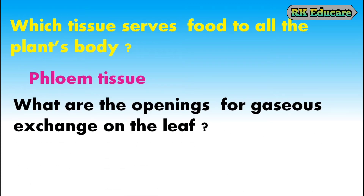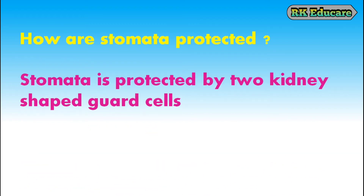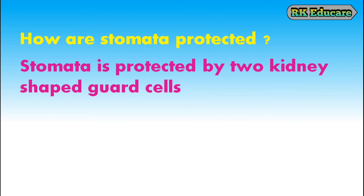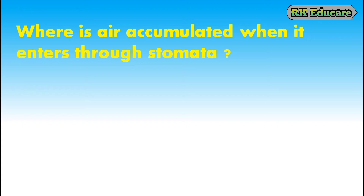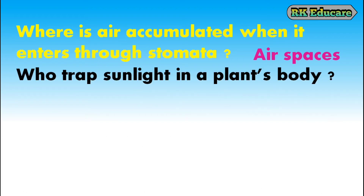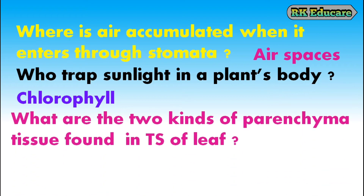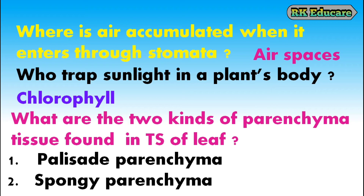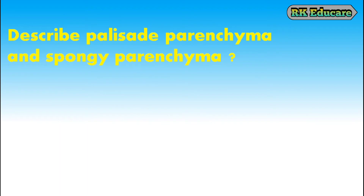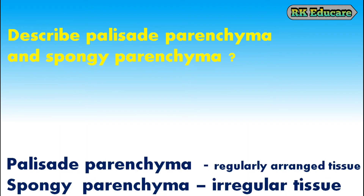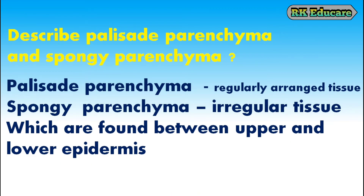What are the openings of gaseous exchange on the leaf? Stomata are the openings of gaseous exchange on the leaf. How are stomata protected? Stomata are protected by two kidney-shaped guard cells. When air enters through stomata, air is stored at air spaces. Who traps sunlight in a plant's body? Chlorophyll traps sunlight in plants. What are the two kinds of parenchyma tissue found in the transverse section of a leaf? Palisade parenchyma and spongy parenchyma. Palisade parenchyma is regularly arranged tissue; spongy parenchyma is irregularly arranged tissue found between upper and lower epidermis.